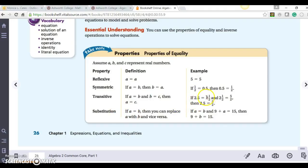So if 2.5 equals 2 and 1 half, and 2 and 1 half equals 5 over 2, then 2.5 equals 5 over 2.